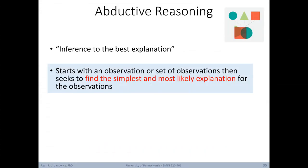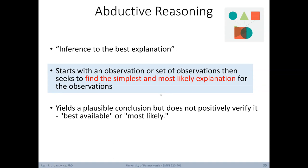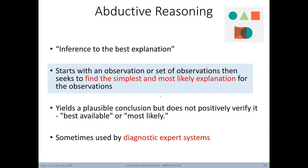Abductive reasoning is basically inference to the best explanation. We start with an observation or set of observations, then seek the simplest and most likely conclusion or explanation. It yields a plausible conclusion but does not positively verify it — it's a best available or most likely conclusion. This kind of reasoning is sometimes used by diagnostic expert systems that we'll learn about later.